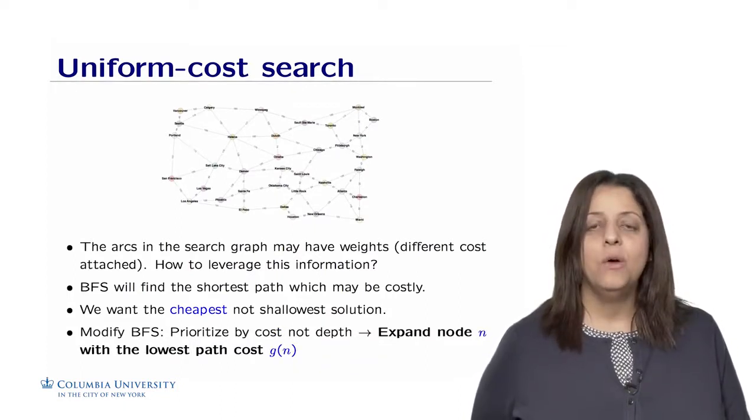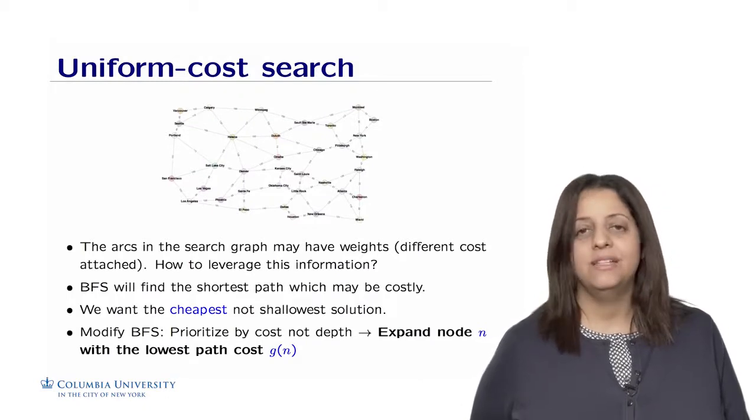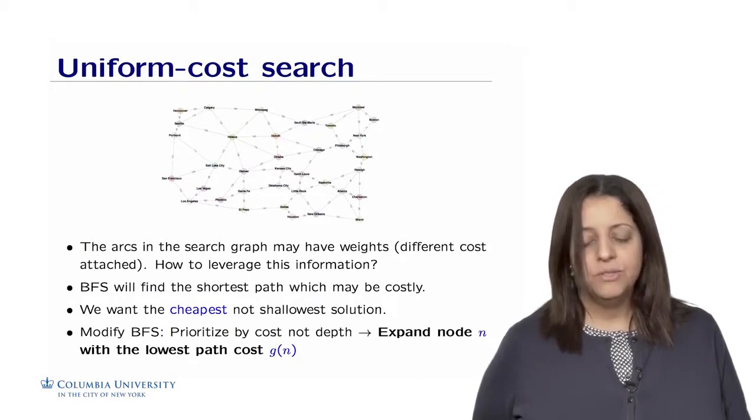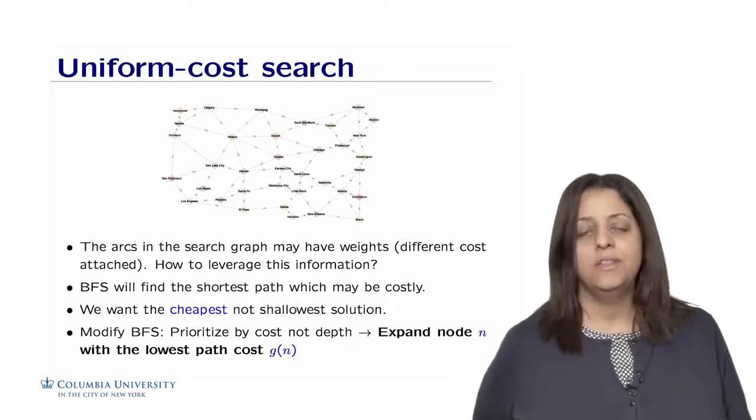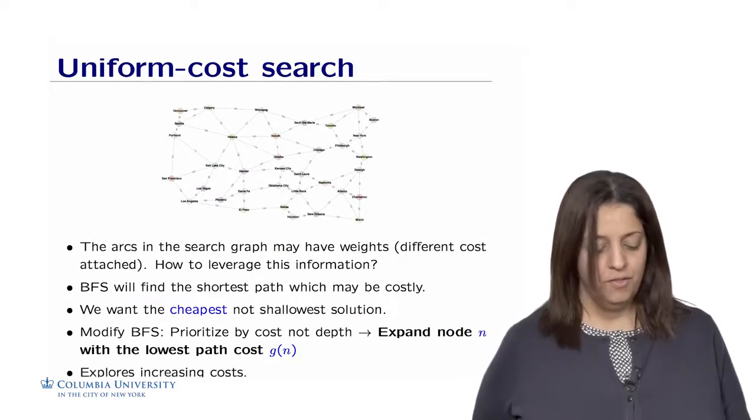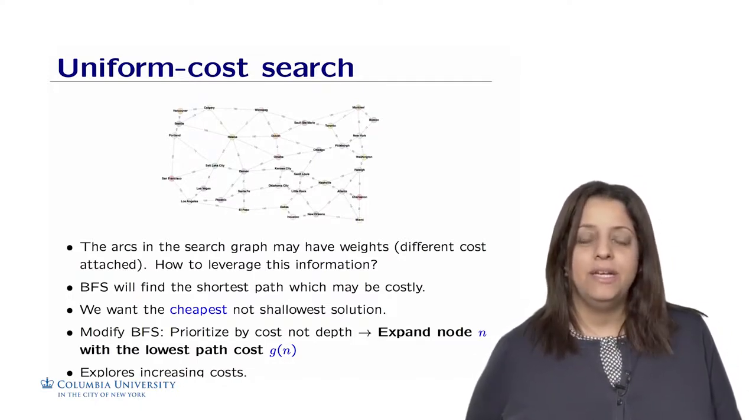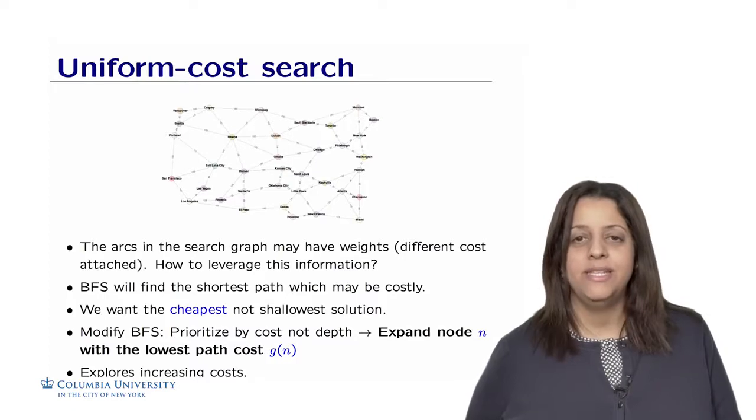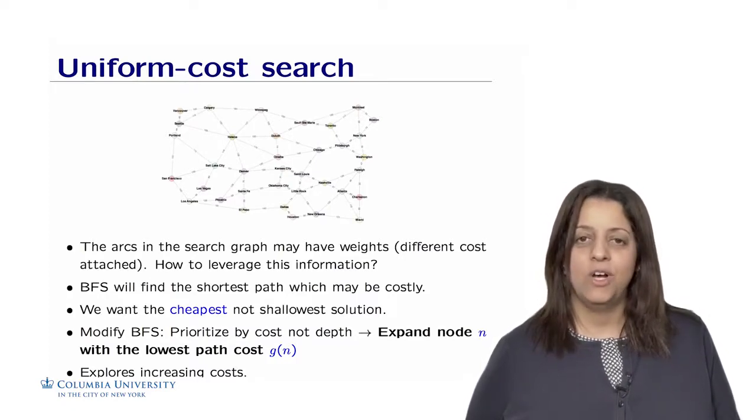The idea then is to modify BFS to prioritize by cost, rather than prioritizing by depth, which means we are going to expand the node n with the lowest path cost, which we call g of n, rather than expanding by the depth of the node. The approach is to explore by increasing cost, rather than by increasing depth, such as done by BFS. This method is called Uniform Cost Search.